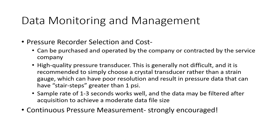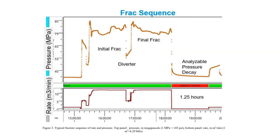Here's the chart that gives you some data you've seen during your frack stage treatment. This is when you had the diverter drop, and this is your rate during the frack treatment. The analyzable pressure decay is about 1.25 hours, shown over here, especially shown by the straight line decline.